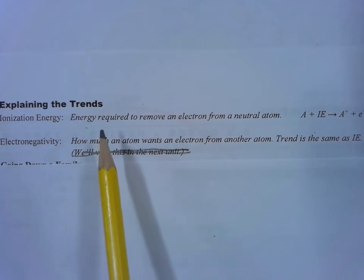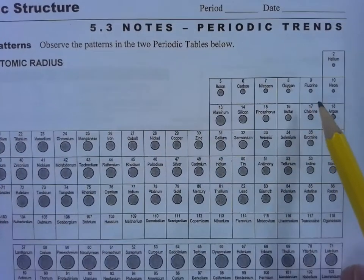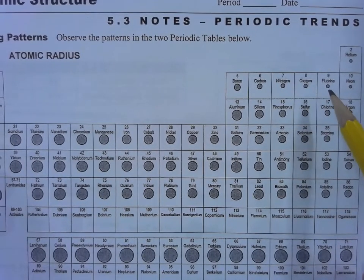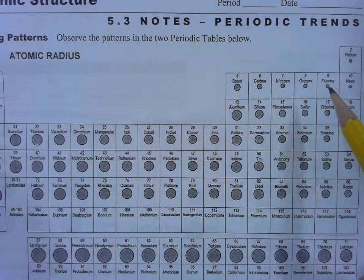Ionization energy, energy required to remove an electron from a neutral atom. Electronegativity, how much an atom wants an electron from another atom. The most electronegative atom is fluorine. I'll find a video for you that shows actual fluorine gas. It's extremely electronegative and wants electrons like nobody's business. It will react with anything, highly electronegative.